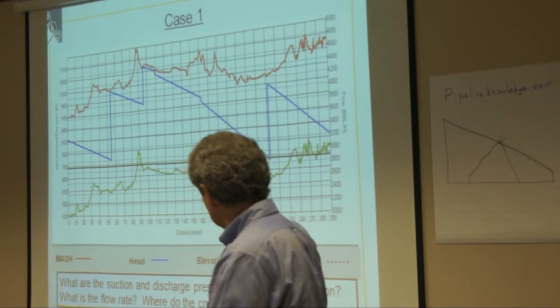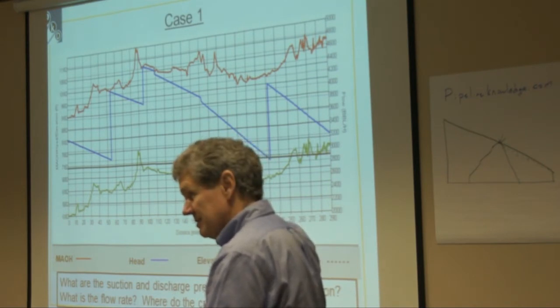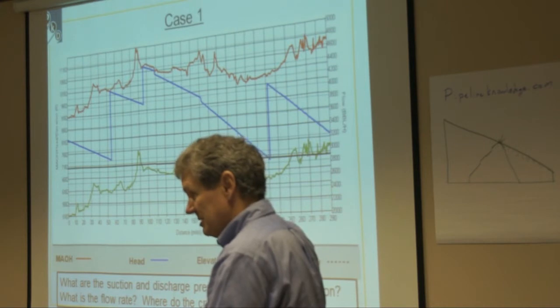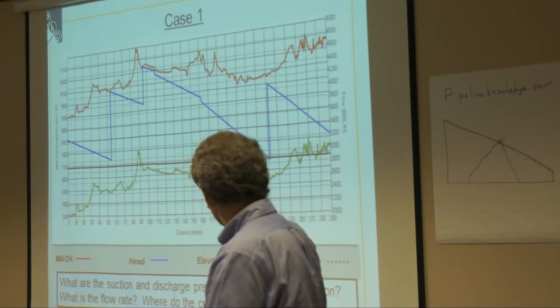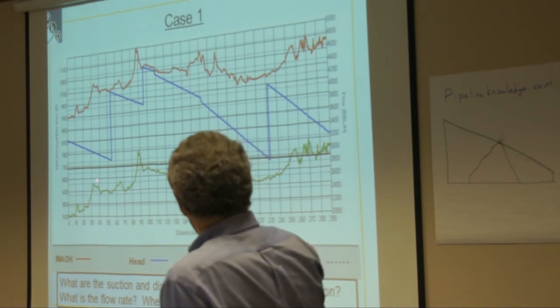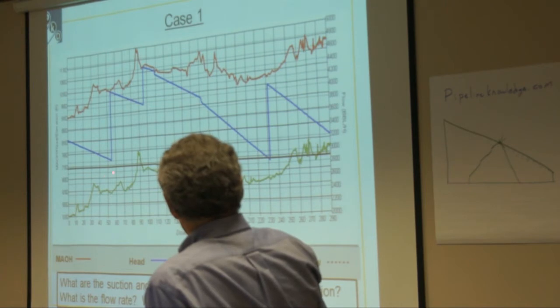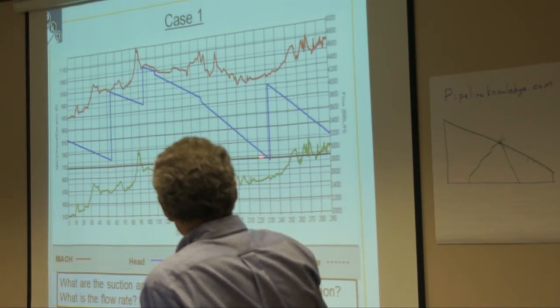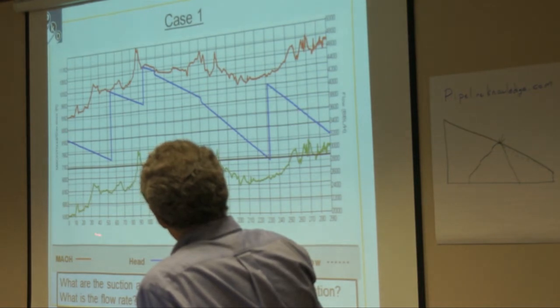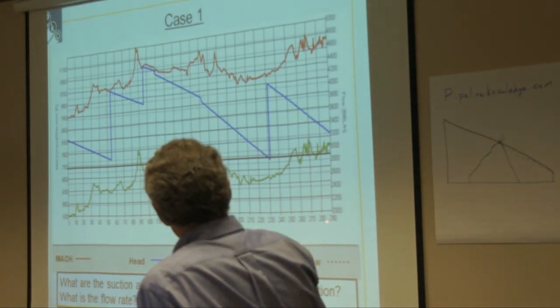We've got here the green line, there's the profile, the red line is the maximum level operating pressure line, blue line is hydraulic gradient, the black line there is the flow, which is red over here, so maximum level operating pressure there, distance in miles here.